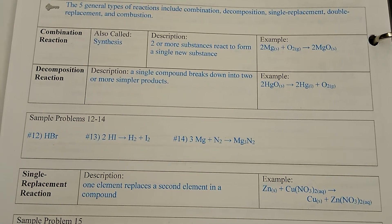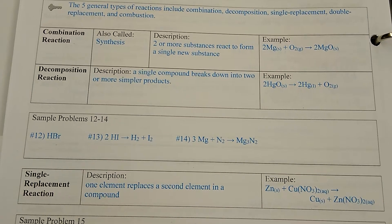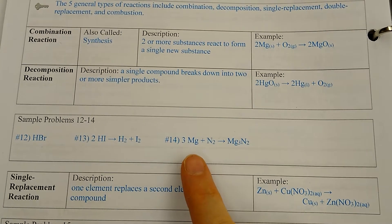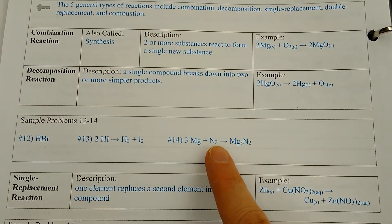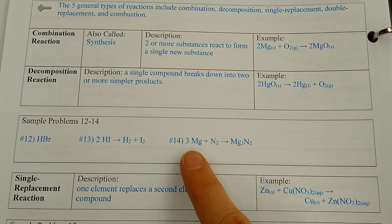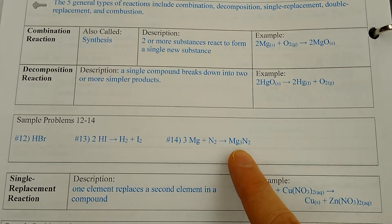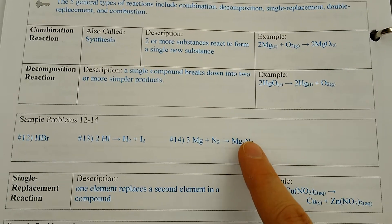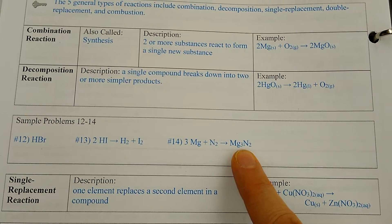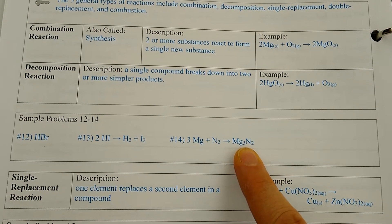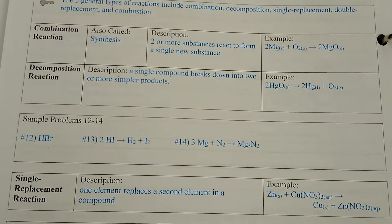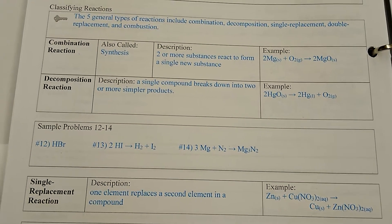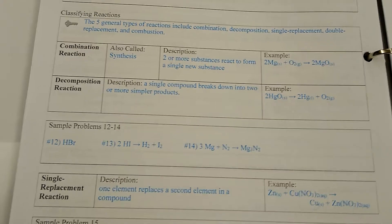Number 14 said: write and balance the equation for the formation of magnesium nitride from its elements. Magnesium nitride is made out of magnesium and nitrogen. Magnesium is +2 and nitrogen is -3. When you bring those charges down to get your ratio, you get Mg₃N₂. Then to balance it, we put a 3 in front of magnesium. The back of the book does have answers to sample problems.